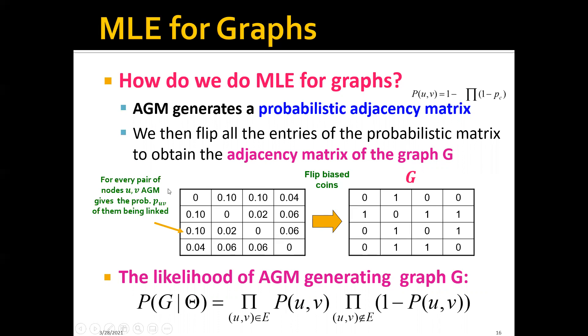So basically for each pair of nodes U and V here, AGM will give the probability of them being linked. And then we will just flip all these biased coins.